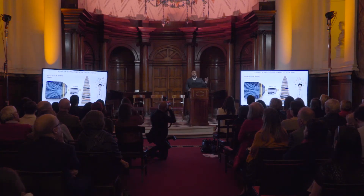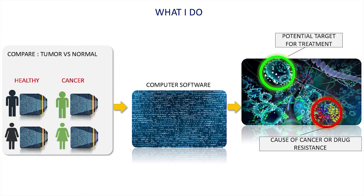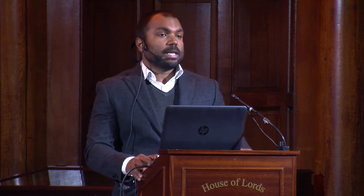However, even though this provides very detailed information about what's inside the tumor, it provides too much information for processing manually. So what I do is I develop computer software which analyzes this kind of data from healthy and tumor tissues, compares them, and then figures out which components are damaged or present in wrong quantity in the tumor tissues compared to the healthy tissues, and uses this information to predict treatment.